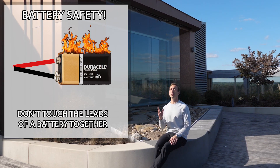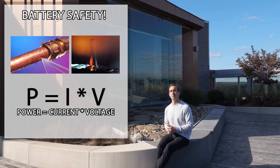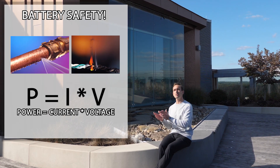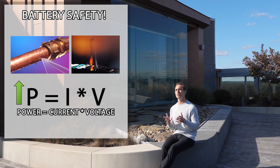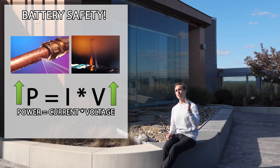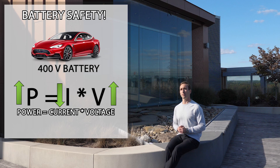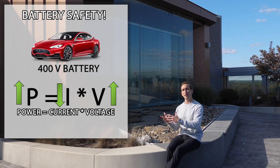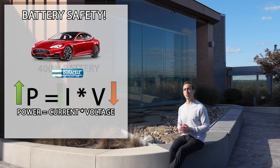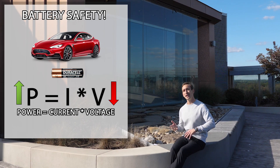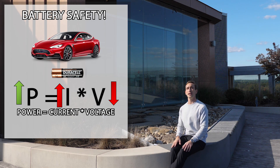Another thing to be mindful of is choosing the voltage of your battery to suit your system. Because power equals current times voltage, if you want to deliver a high amount of electric power, it's better to choose a higher voltage battery so you can limit dangerous current. The Tesla Model S, for example, has a 400-volt battery so it can provide electric power with lower electric current. If you tried to power it with a 1.5-volt battery, you'd need enormous current and run a greater risk of electrical fires or dangerous shorts.